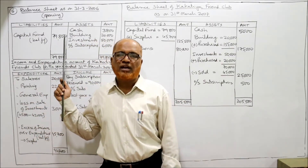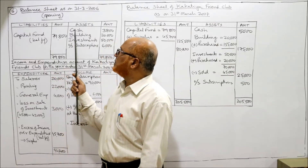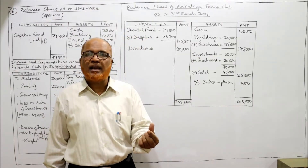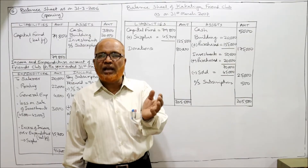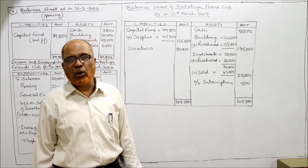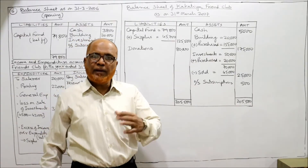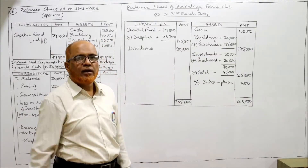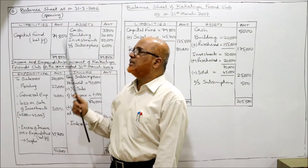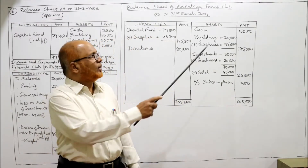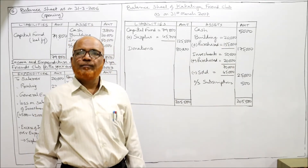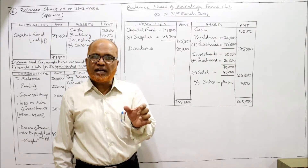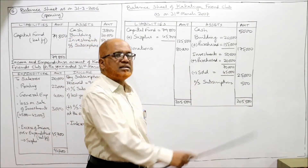On the asset side: opening cash was 3,800; closing cash from the receipts and payments account (last credit side item) is 5,000. Building: opening balance was 20,000, plus building purchased during the year of 1,55,000, giving a total of 1,75,000.